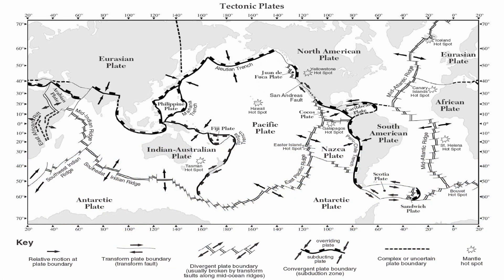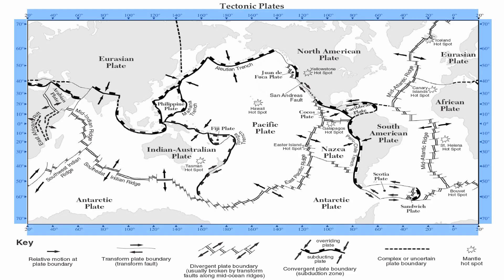Before we get started, the numbers on the left and the numbers on the right are your latitude values. Numbers along the top and numbers along the bottom are your longitude values. The equator separates the Earth into northern and southern hemispheres. Your prime meridian separates the Earth into western and eastern hemispheres, maxing out at 180 degrees — your international date line.